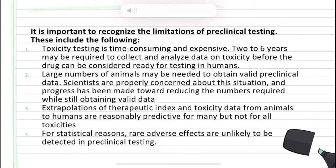It is important to recognize the limitations of preclinical testing. These include the following: toxicity testing is time-consuming and expensive; two to six years may be required to collect and analyze data on toxicity before a drug can be considered ready for testing in humans. Large numbers of animals may be needed to obtain valid preclinical data. Extrapolations of therapeutic index and toxicity data from animals to humans are reasonably predictive for many but not all toxicities. For statistical reasons, rare adverse effects are unlikely to be detected in preclinical testing.